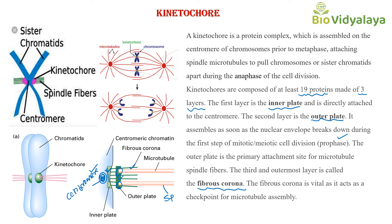The third and outermost layer is called the fibrous corona. The fibrous corona is vital as it acts as a checkpoint for microtubule assembly — checking which chromatids do not have spindle fibers attached to them, and also stabilizing the attachment between microtubules and the kinetochore.